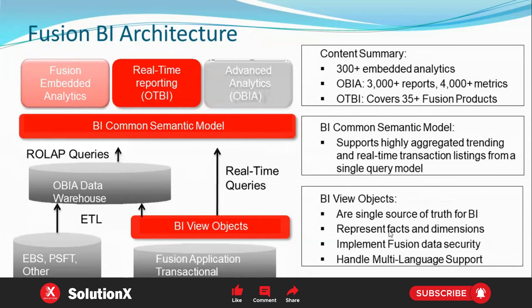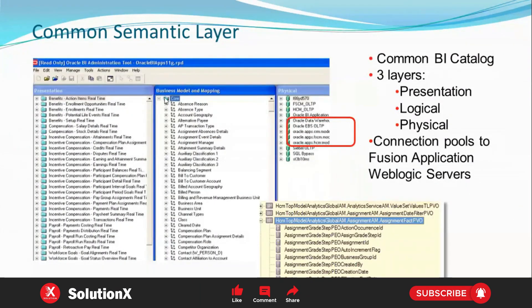BI View Objects are a single source of truth for OTBI, representing facts and dimensions. Facts are calculated columns. In OBI technology, there are three layers: the presentation layer, the logical layer, and the physical layer. These layers automatically connect to the Fusion application database via WebLogic Server. The presentation layer contains all OTBI content — the presentation catalog — which is what we reference in OTBI analysis.